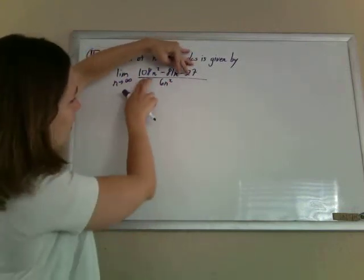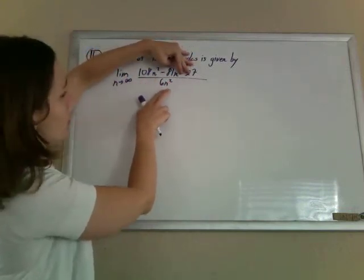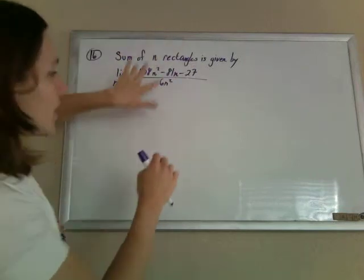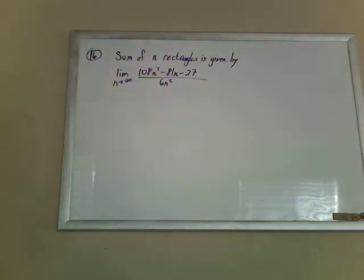So basically you're looking at negative 108 n squared over 6n squared. The n squares cancel out. You get 108 over 6, and that is the hardest part.